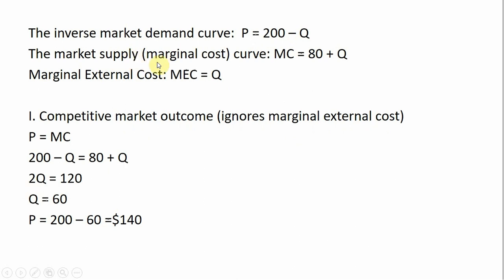The market supply, which is nothing more than the marginal cost curve, is given by MC equals 80 plus Q. We're going to assume that the production of this good leads to a spillover cost or negative externality, and that negative externality is going to be represented by this marginal external cost equals Q.